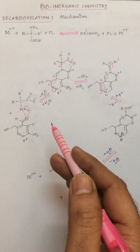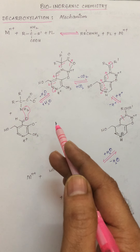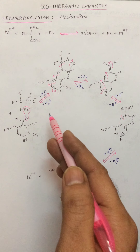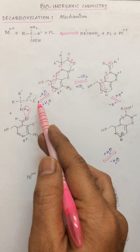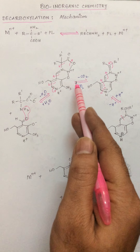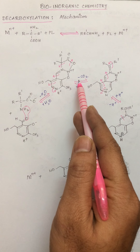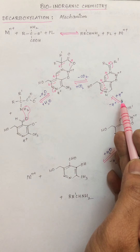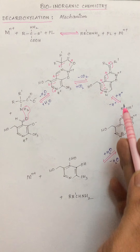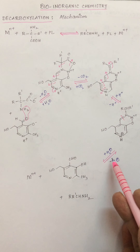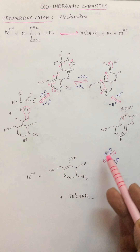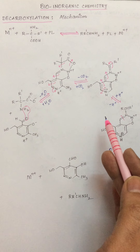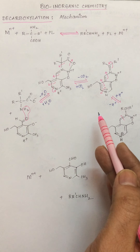The steps involved in the mechanism are just similar to that of transamination, which we discussed in the last video. The four steps are: removal of a water molecule, removal of carbon dioxide, addition of H+, and addition of H2O where the process of hydrolysis occurs.